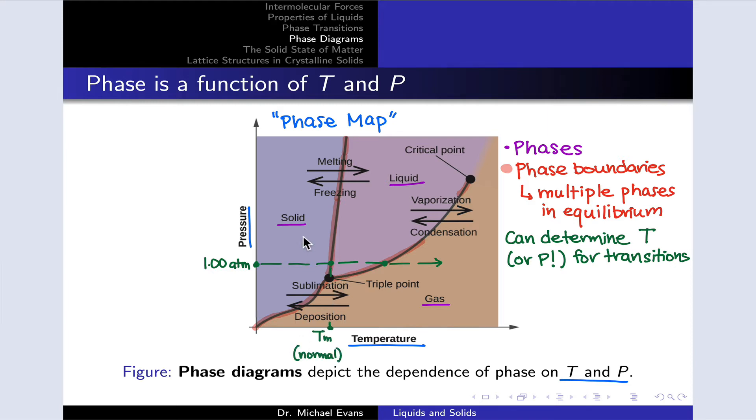Where we go from solid to liquid, this is the melting point, Tm, the normal melting point at one atmosphere. And here, we're going from liquid to gas phase as we increase temperature—this is the normal boiling point, Tb. We can use the phase diagram to determine the temperature or pressure associated with phase transitions.